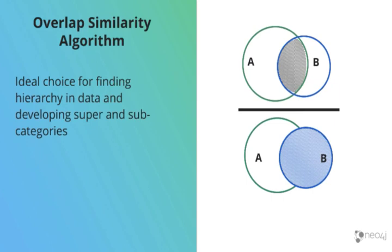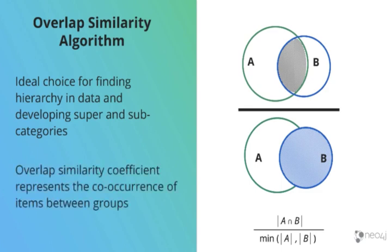The overlap similarity algorithm is a perfect choice when we're trying to find hierarchy in data and want to create super or subcategories. This is related to how it measures overlap between two groups of nodes. Mathematically, the coefficient is defined as the intersection divided by the smaller of the two groups. The algorithm provides a similarity coefficient that represents the co-occurrence of items between those groups.